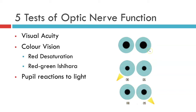The test for relative afferent pupillary defect depends on the fact that in the dark, both pupils are dilated. If you shine light on one eye only, both pupils will constrict by an amount commensurate with how well the optic nerve is functioning.